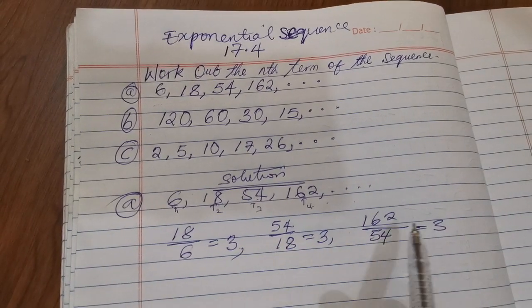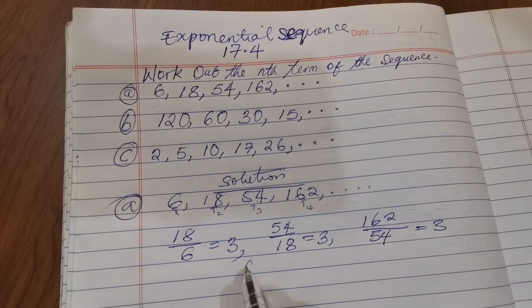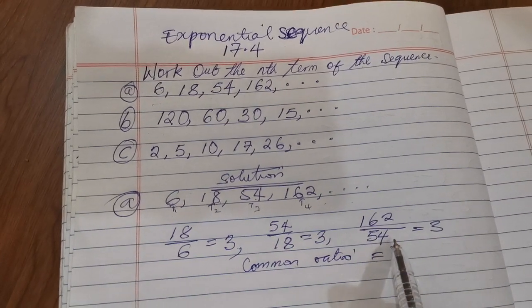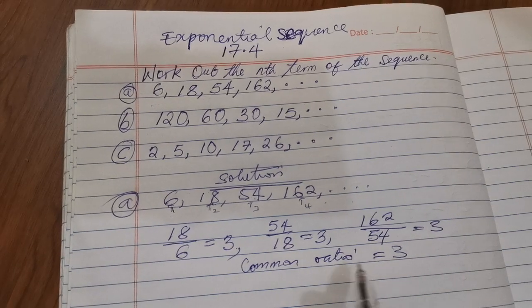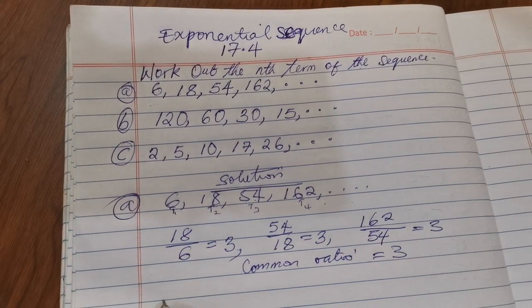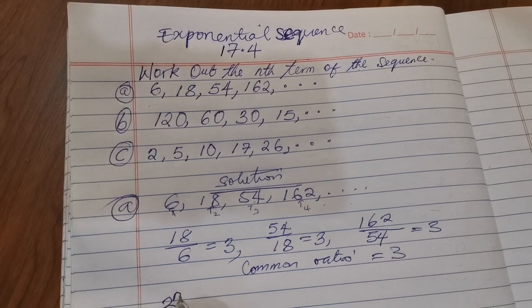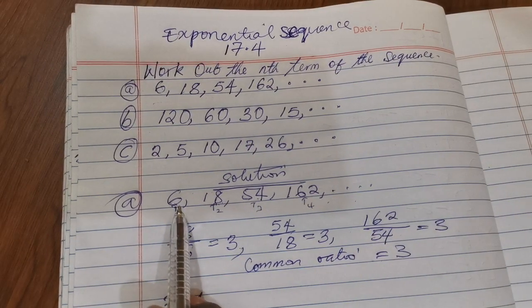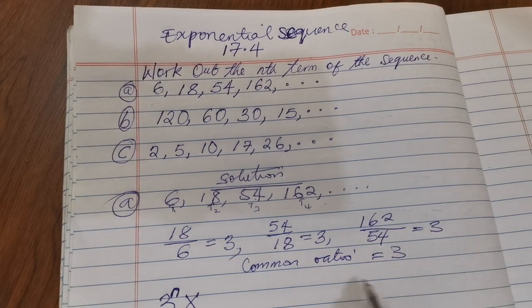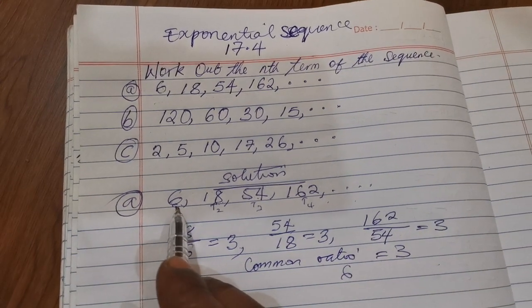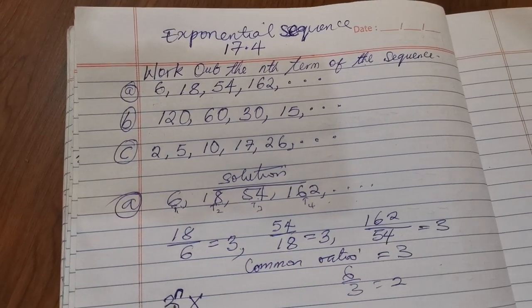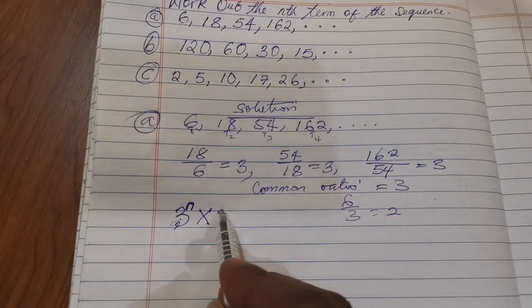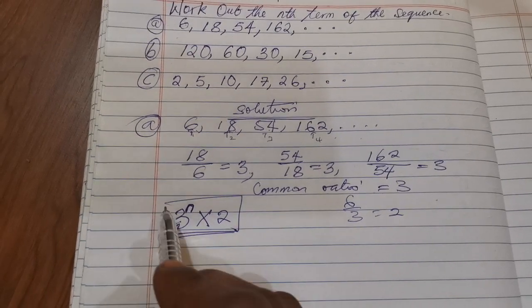54 divided by 18 is 3, and 162 divided by 54 is also 3. Since the common ratio is 3, the first part of the nth term is 3 raised to power n. Then we multiply by the first term divided by the common ratio: 6 divided by 3 is 2. So the nth term is 2 × 3^n.